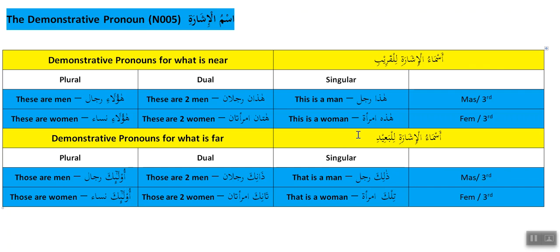If I say 'a man lives down the road' — which man? It's indefinite. But if I say 'this man lives down the road' and I point to him, now I'm talking about a specific man.